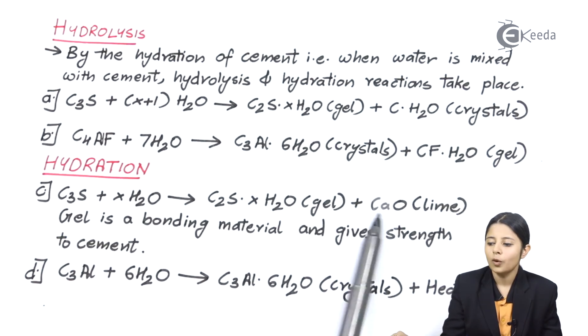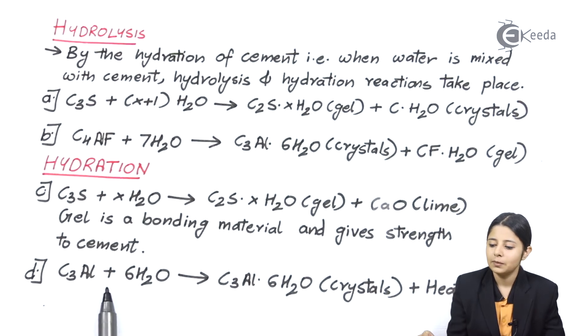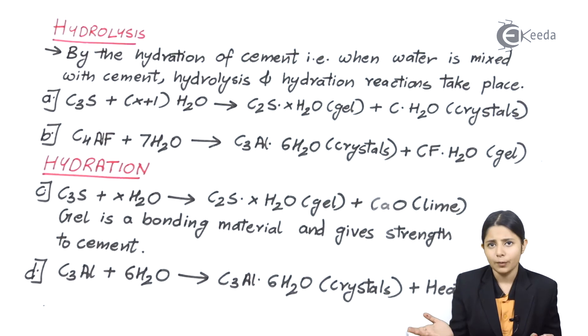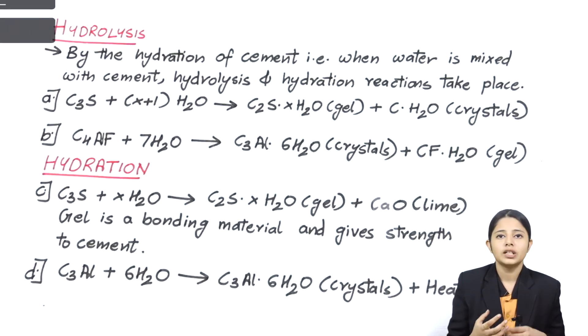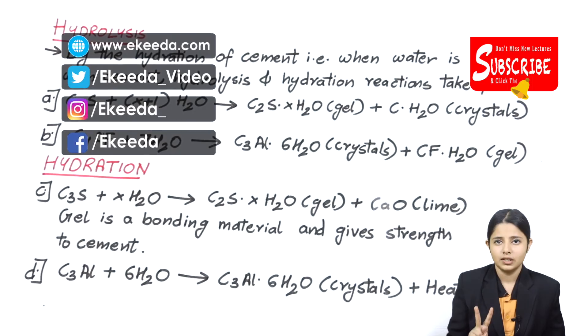The last reaction is C3Al plus 6H2O forming C3Al·6H2O crystals and heat. These four reactions are the major reactions which give products in gel, crystal, and lime format. Because of these products we get the two most important properties: setting and hardening.